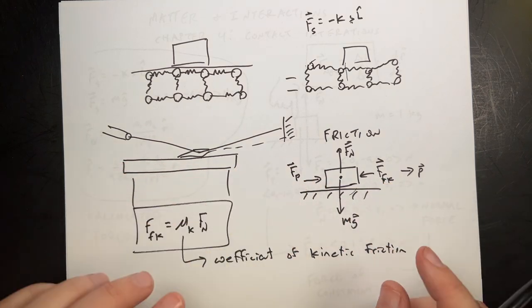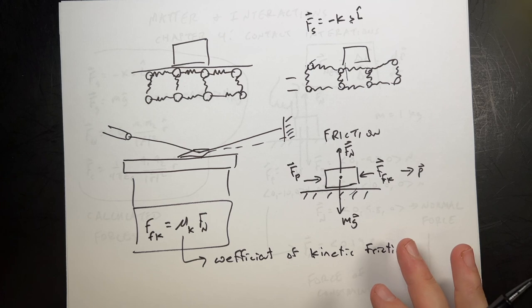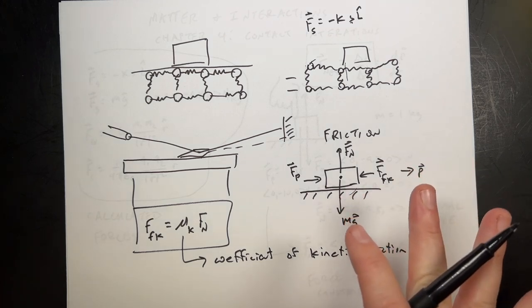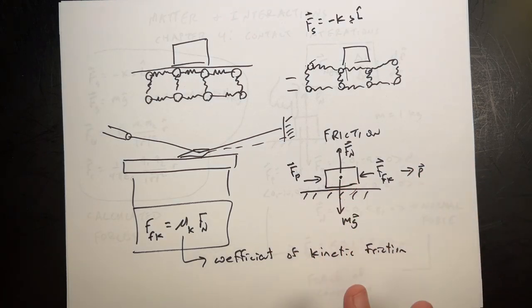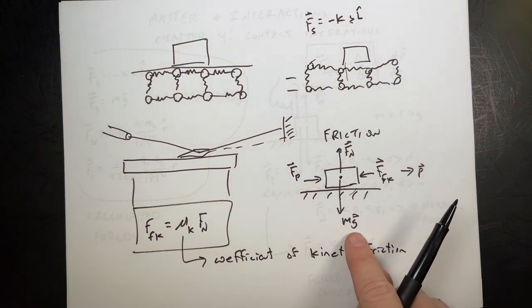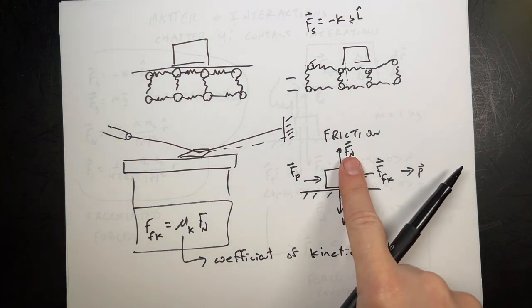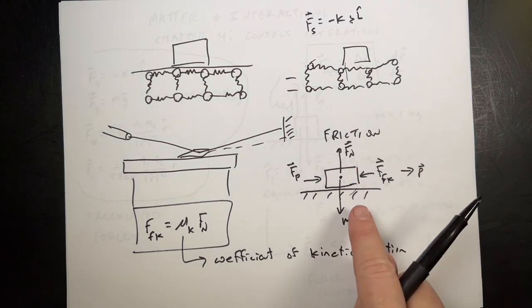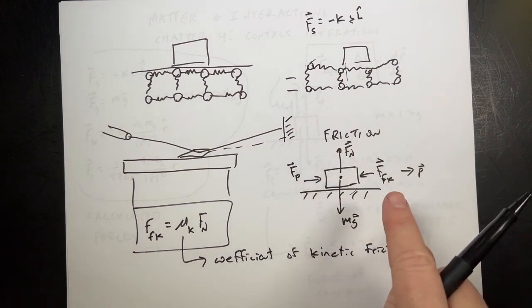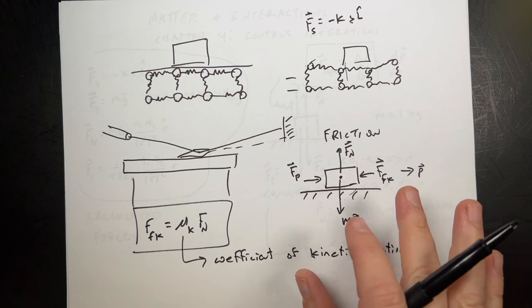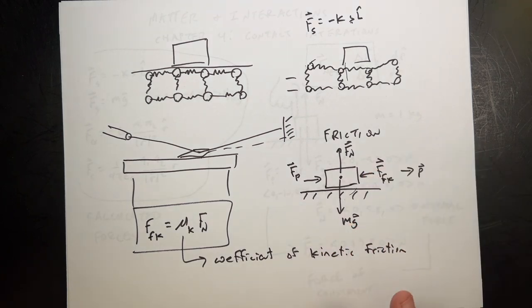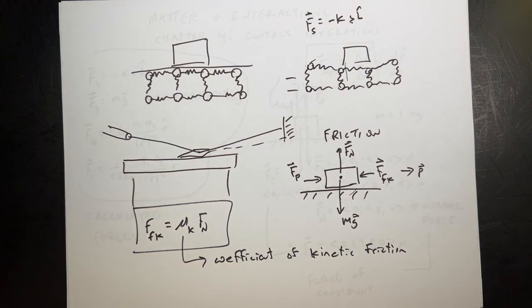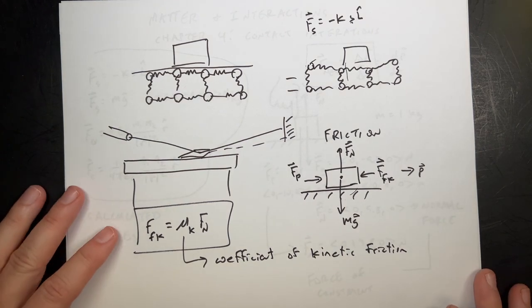We call μ_k the coefficient of kinetic friction. It's just a model that works really well. It says that the harder these two surfaces are pushed together, the greater the friction force — and it doesn't say anything about speed. If you're pushing a block and you push down on it harder, it's harder to push. If it's a heavier block, you get a greater normal force too. Be very careful — this is a simple situation where everything's flat. If you have it on an angle, the normal force is not straight up.